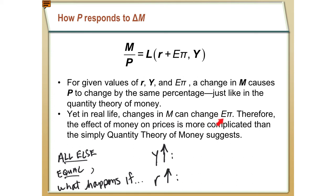If M goes up, expected inflation could go up as well — and they don't necessarily have to be in proportion to one another. Expectations are built on a number of things. So the money supply relationship is more complicated than what we saw in the quantity theory. Let's look at what happens when R or Y changes. This is all else equal — in order to see the impact of one variable on another, we keep everything else constant. This is just the basic scientific approach: keep everything the same, change one thing, and see how that impacts things.